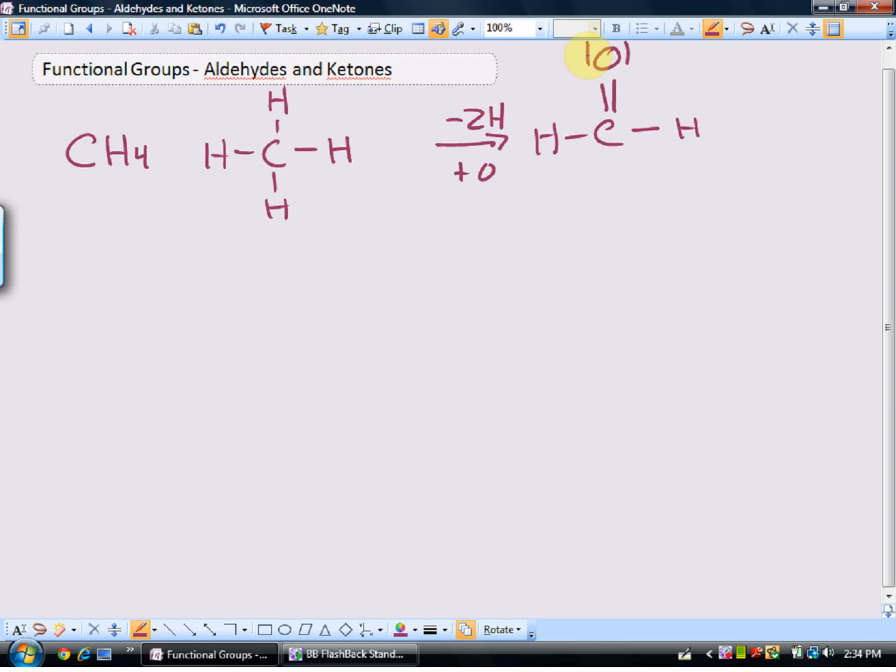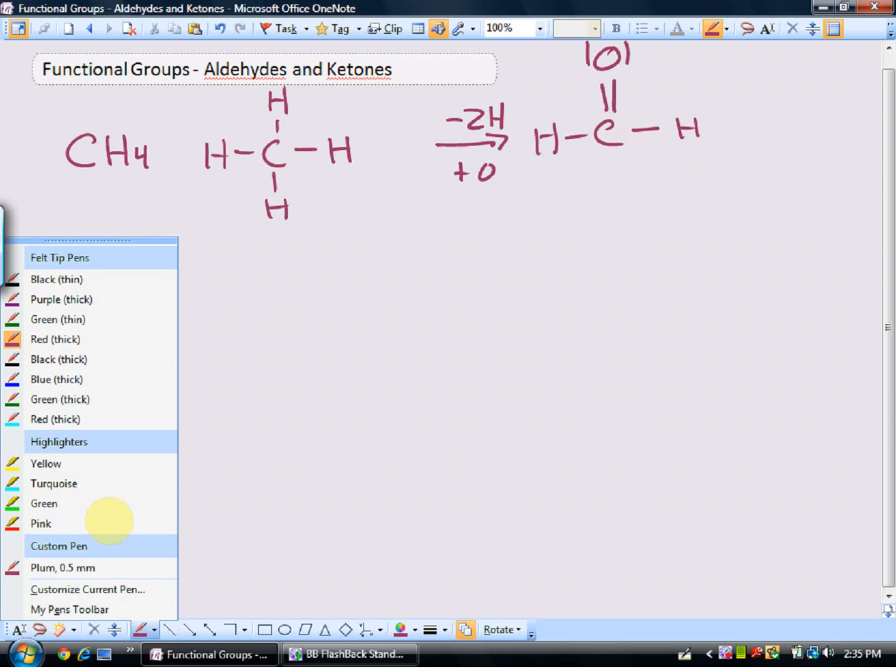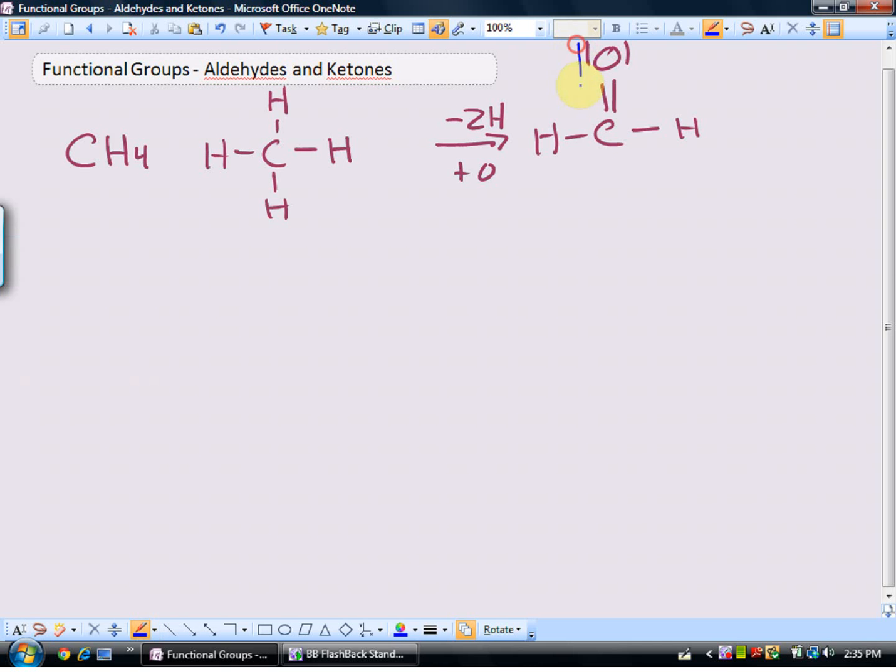Again, notice that everybody's happy here. Hydrogens got its one valence, its pair of valence electrons. The carbon has four pairs of valence electrons, and the oxygen has formed two bonds, and it has its four pairs of valence electrons, or eight valence electrons. So now we've introduced a new functional group, and that new functional group is characterized by this carbon-oxygen double bond combination right here. And we call that the carbonyl group.